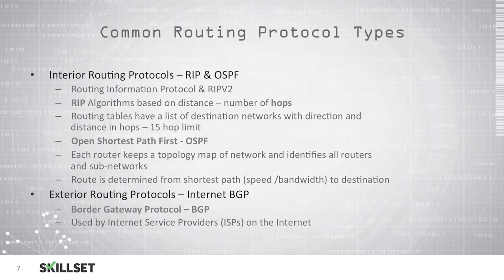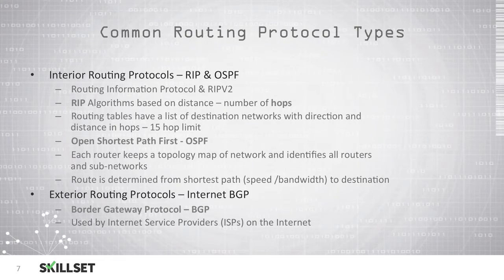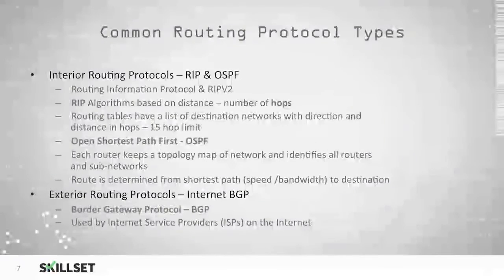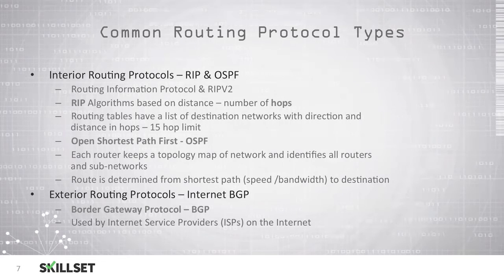There are two common interior routing protocols: Routing Information Protocol or RIP, and OSPF or Open Shortest Path First. There are two versions of RIP — RIP and RIP version 2 — and this protocol uses an algorithm based on the distance and the number of hops or stops along a route. Routing tables commonly have a list of destination networks with direction and distance in hops, and typically try to remain within a 15-hop limit. The more common technology is OSPF, where routers keep a topology map and determine the route using the shortest path based on speed or bandwidth to the ultimate destination.